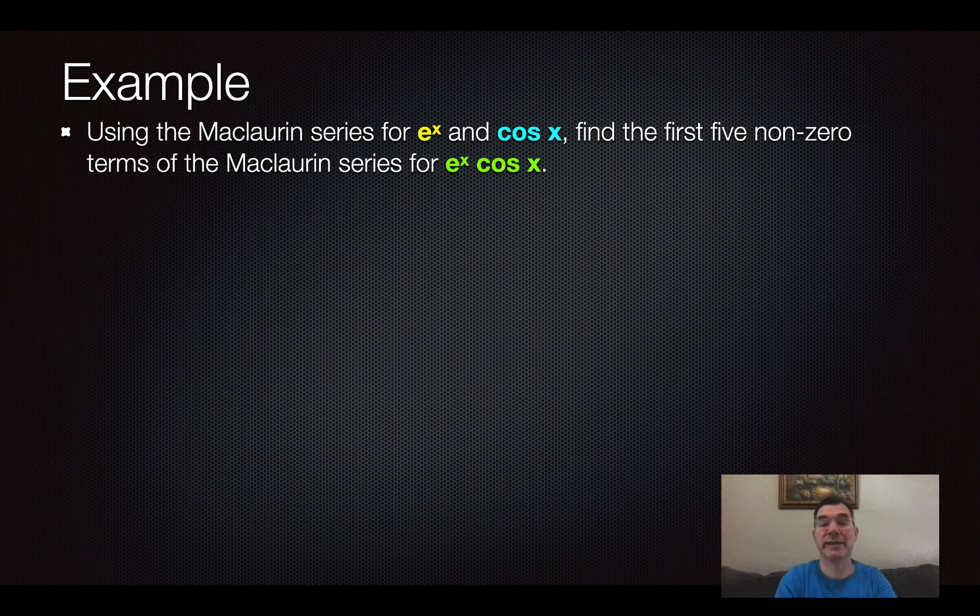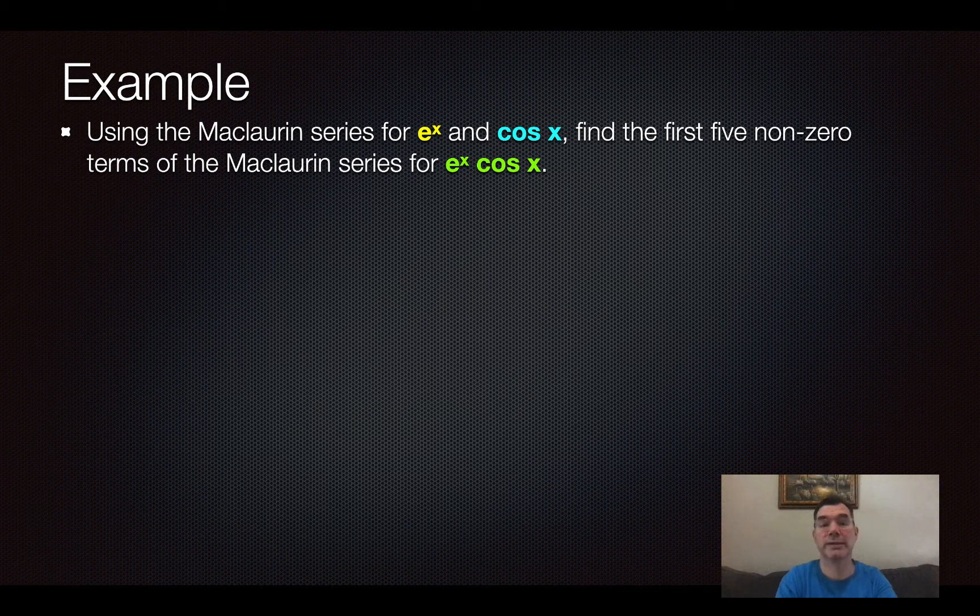We're going to use the Maclaurin series for e to the x and cosine x, and we're going to find the first five non-zero terms of the Maclaurin series for e to the x times cosine x.